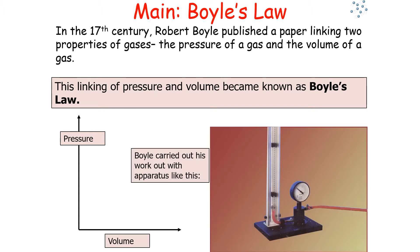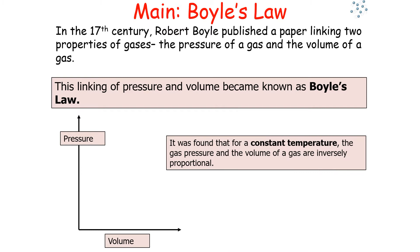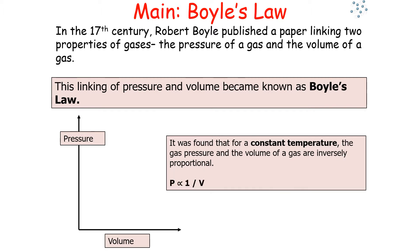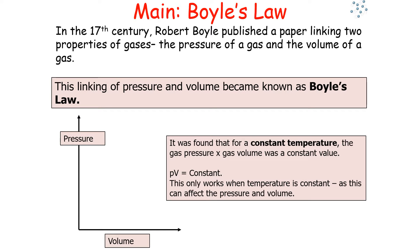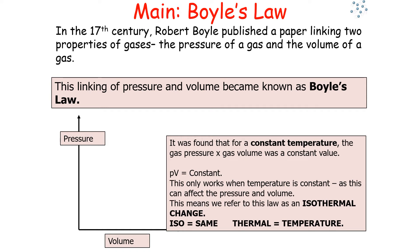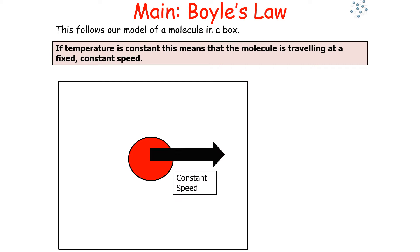Boyle carried out his work with experimental apparatus, and it was found that for a constant temperature, the pressure and the volume of a gas are inversely proportional. So we can say P is directly proportional to 1 over V, or write it as PV equals a constant. This equation only works when the temperature is constant, as the temperature of the gas can affect its pressure and volume. We refer to this as an isothermal change, because 'iso' means the same and 'thermal' means temperature, indicating that the temperature has not changed.